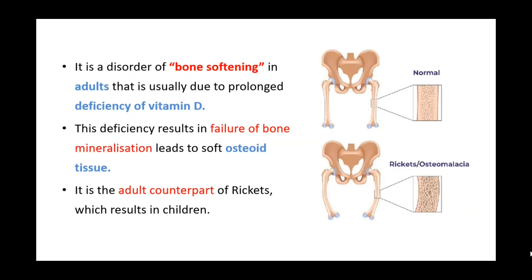Osteomalacia is a disorder of bone softening in adults and is the adult counterpart of rickets. It is due to prolonged deficiency of vitamin D, which results in failure of bone mineralization. Due to the deficiency of vitamin D, there is decreased absorption of calcium and phosphate in the body, which leads to soft osteoid tissue.